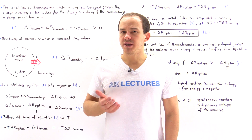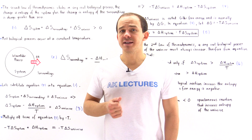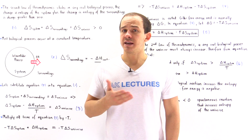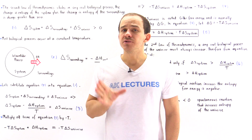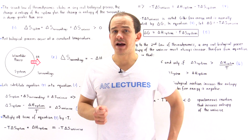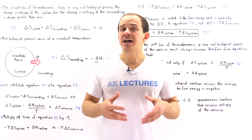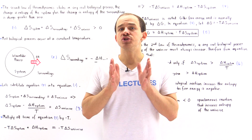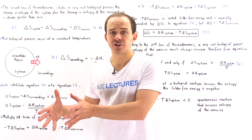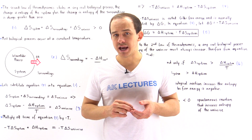Based on the second law of thermodynamics, we know that whenever any reaction takes place in nature, whenever any physical or biological process takes place in nature, the change in entropy of the universe must be a positive value — the entropy of the universe must always increase. That's equivalent to saying the total amount of energy in the universe after the reaction must be more spread out than before that reaction took place.